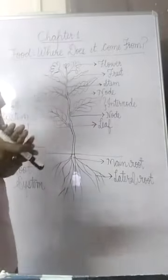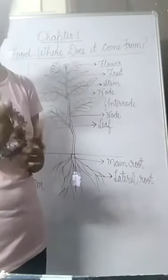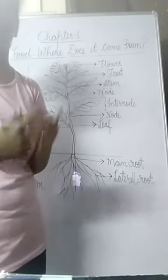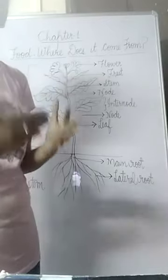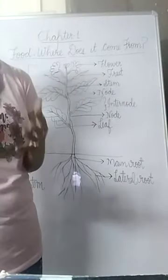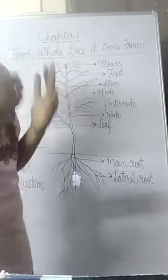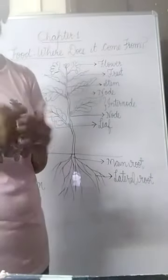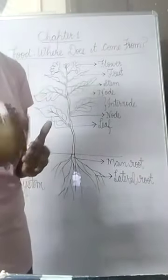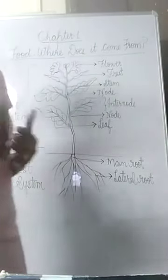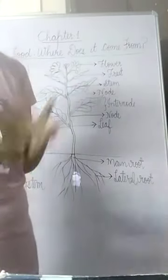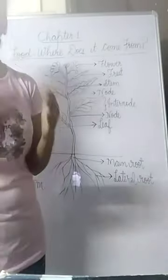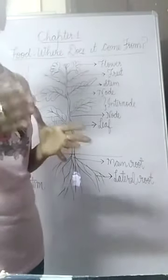Sometimes we use different parts of one plant for edible purposes. For example, in case of the mustard plant — mustard means sarsu — the mustard seeds are used to obtain oil, and the leaves of the mustard plant are used as a vegetable. So sometimes we eat more than one part of a plant. Let us take one more example — the banana. Banana is a versatile plant; we eat almost all parts of the banana except the root.